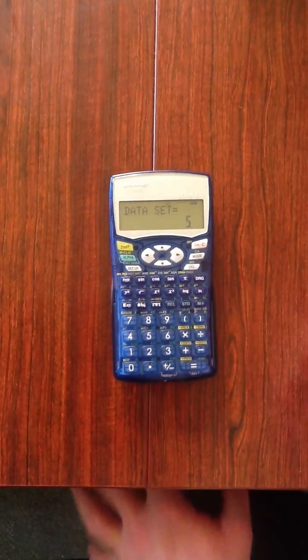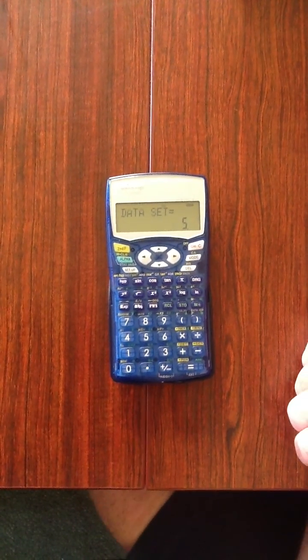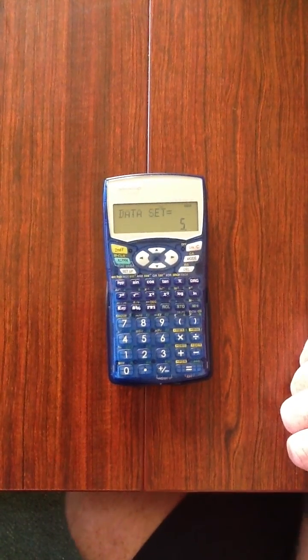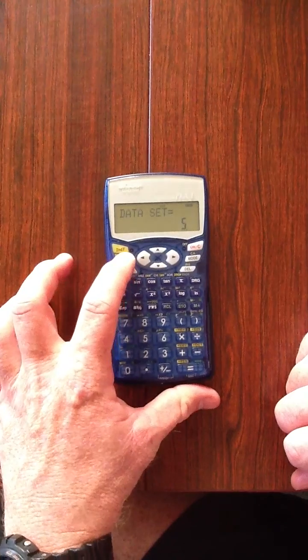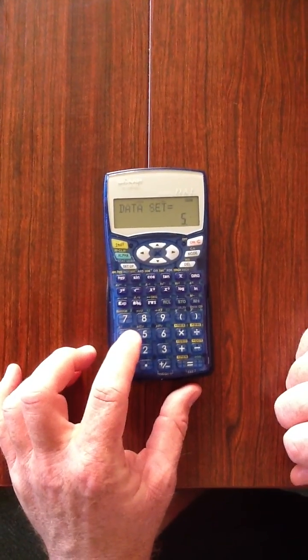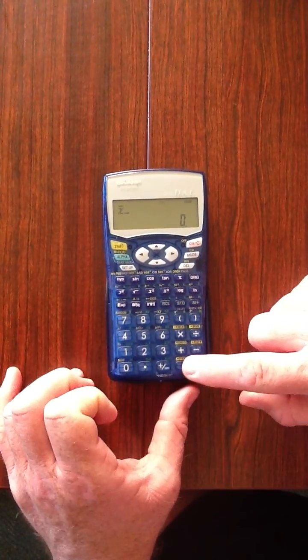Okay our screen should read data set equals five. Again to calculate the mean, it is the same as the previous, we press alpha and X bar, and equals.